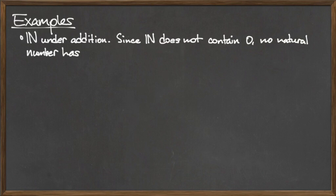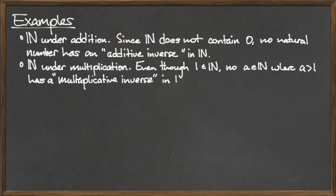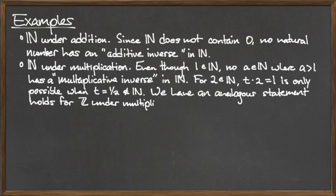To conclude, we will present several sets and state whether or not inverse elements exist under specific operations. The first example is the natural numbers under the operation of addition. Recall that the natural numbers do not contain 0, and 0 is the additive identity. We mentioned previously that if a set does not contain an identity element, then its elements cannot have inverses. Since the natural numbers do not contain the additive identity 0, the elements of the natural numbers do not have inverses.